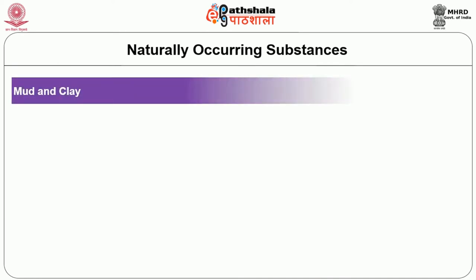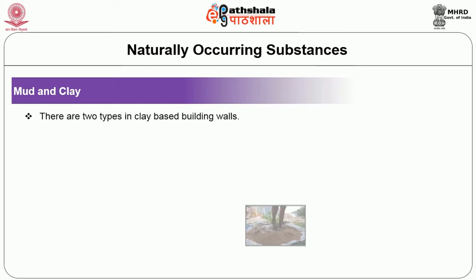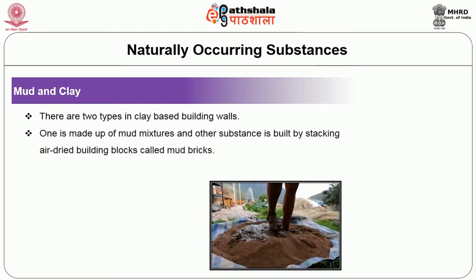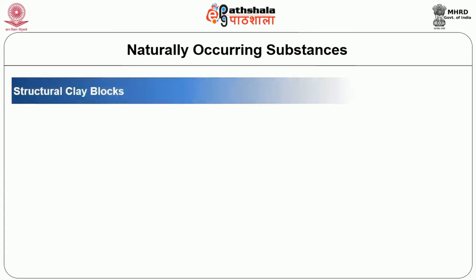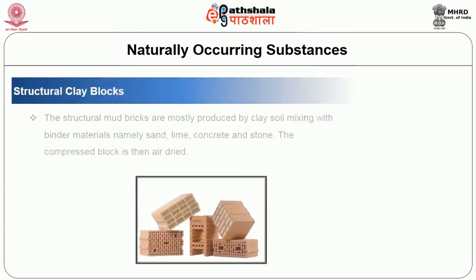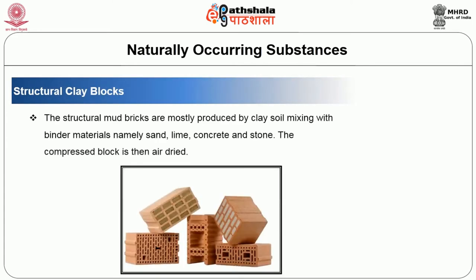The first naturally occurring material is mud and clay. There are two types of clay-based building walls: one is made up of mud mixtures and other substances, and the other is built by stacking air-dried building blocks called mud bricks. Similarly, clay in building is mixed with straw to produce light clay.